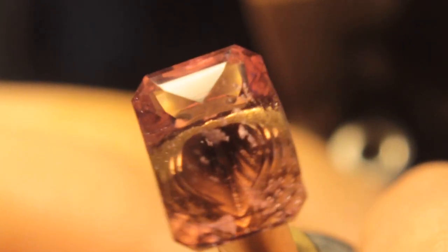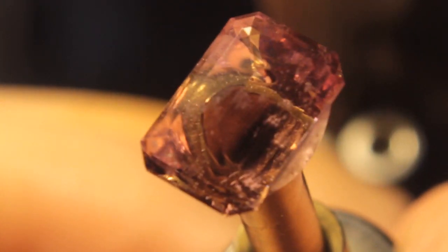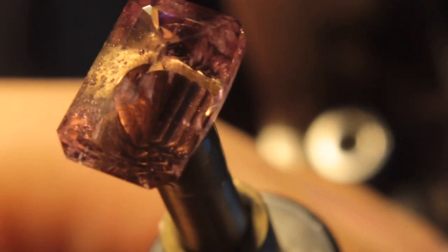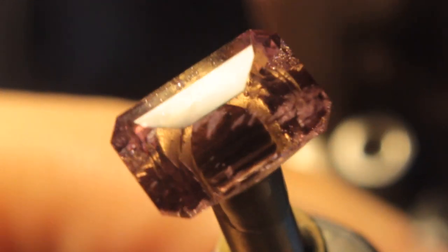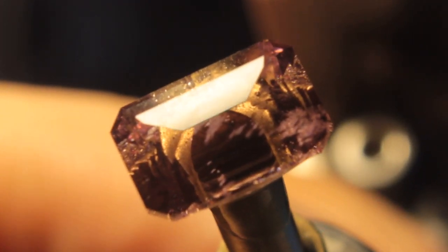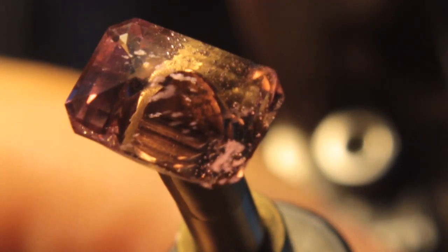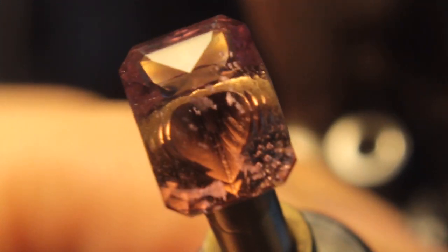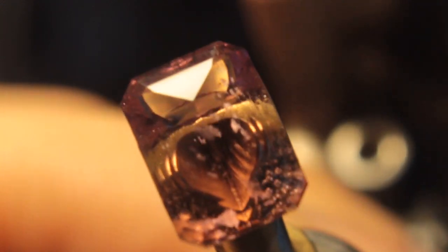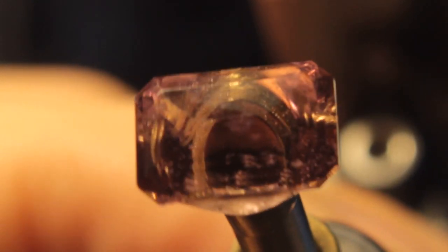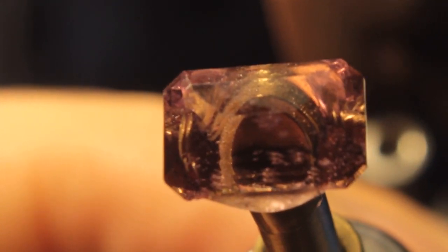I finished polishing the crown of our morganite, and I used the Spectrum Ultralap. I used a really good pre-polish so that I just had to touch it a little bit with the Ultralap. Some people say the Ultralap rounds corners because it's mylar, but I find that if you have a good pre-polish and you're just touching it with the Ultralap, it's not the case. The corners, the facets are nice and crisp. So now I will set the stone up to cut the table and polish the table, and then we'll be done.